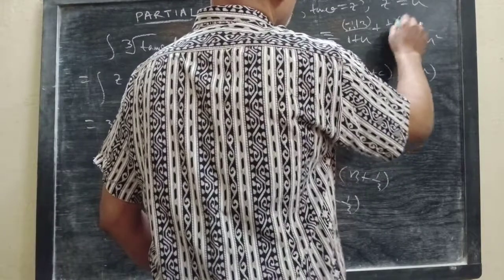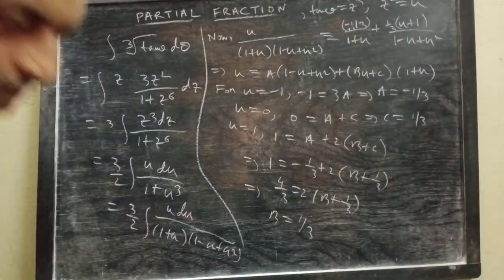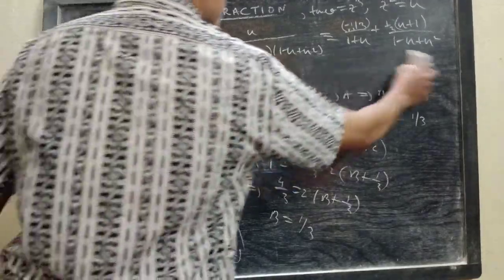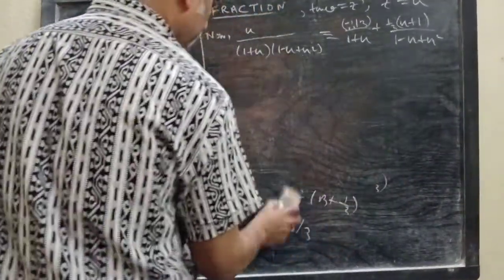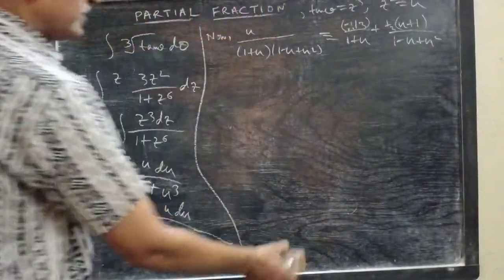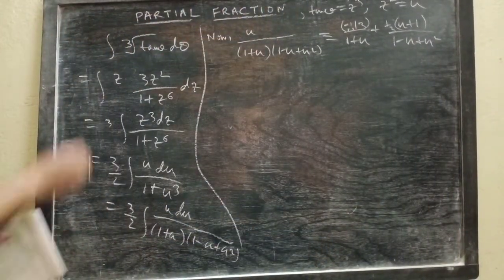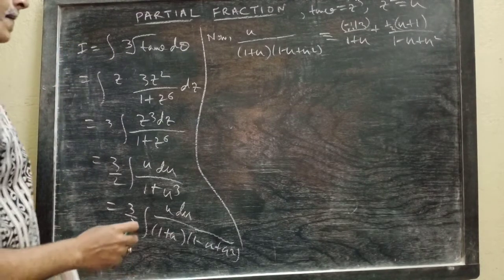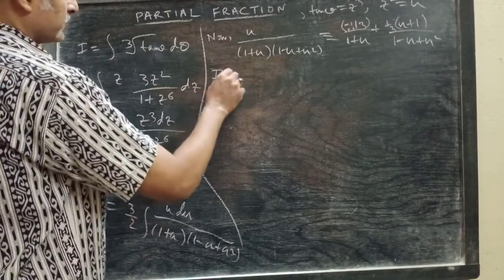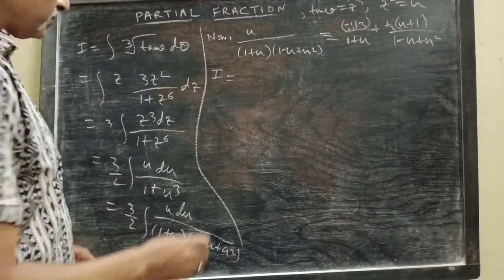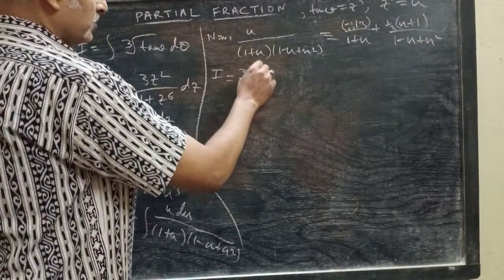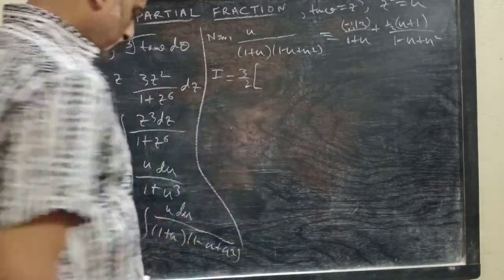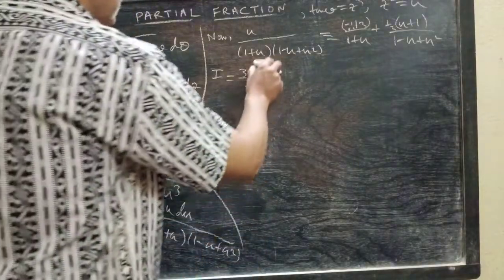So we get the values of the constants: A = −1/3, B = 1/3, C = 1/3. Let this be our integral I. So I becomes (3/2) times the bracket with these partial fractions.